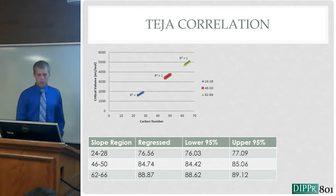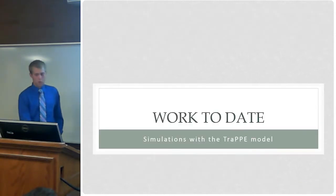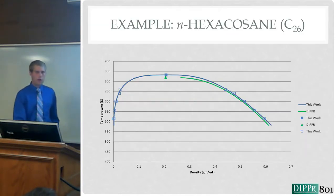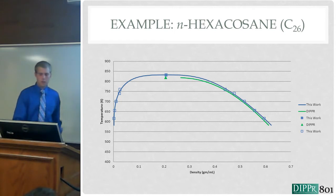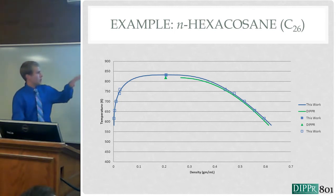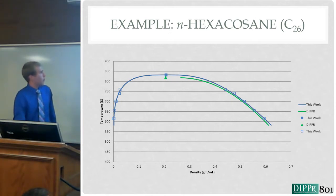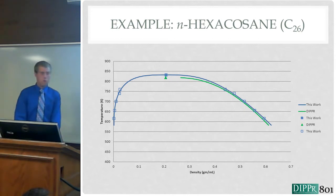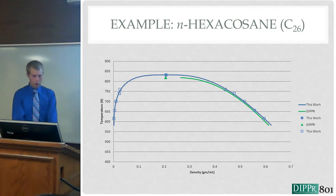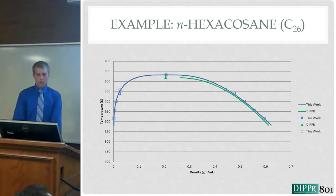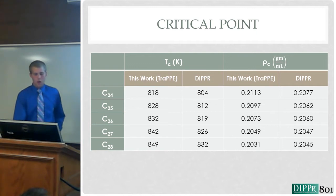My work to date has only involved the TRAP model, which was developed by Seatman. Here's one example from the C24 to C28 regime, specifically hexacosane. The liquid density agrees fairly well with the DIPPR predicted trend, and the critical point — represented by the filled-in symbols — agrees fairly well. It should be noted that it's already well known that the TRAP model over-predicts the critical temperature, but since I'm specifically interested in critical density, that doesn't affect my results at this point.